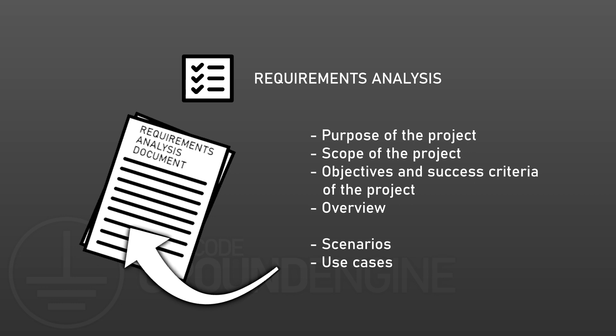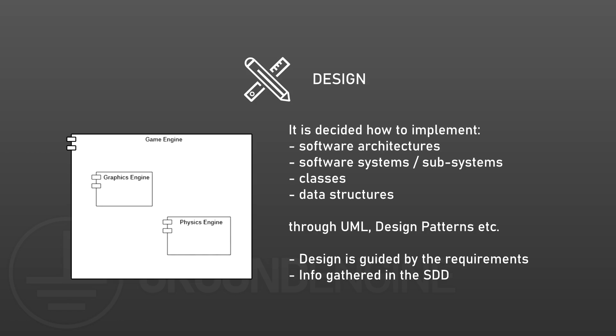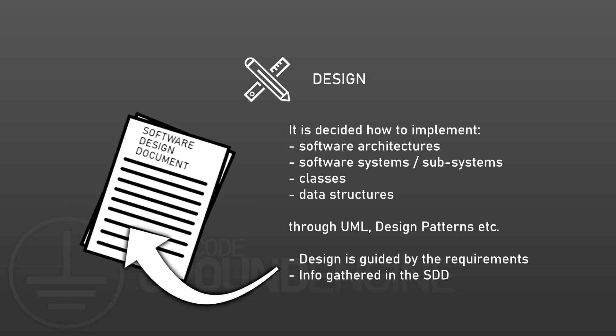Once the requirements have been analyzed, it's the turn of the design part. Software design is the part of software development process where it is decided how to implement concretely the software architecture, and consequently how to make the various software systems and subsystems that will compose it. This process is done through the usage of tools like UML, that is the unified modeling language, software design patterns, and so on. The design is guided, and so constrained, by the requirements defined earlier. All the diagrams and information collected during this part are usually gathered in the software design document, or SDD.